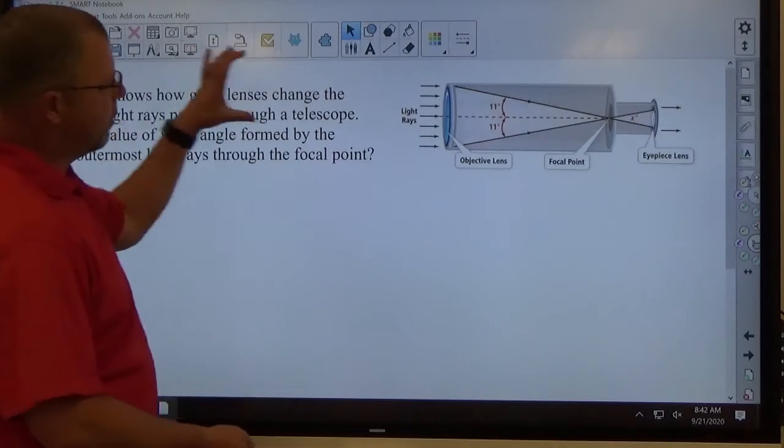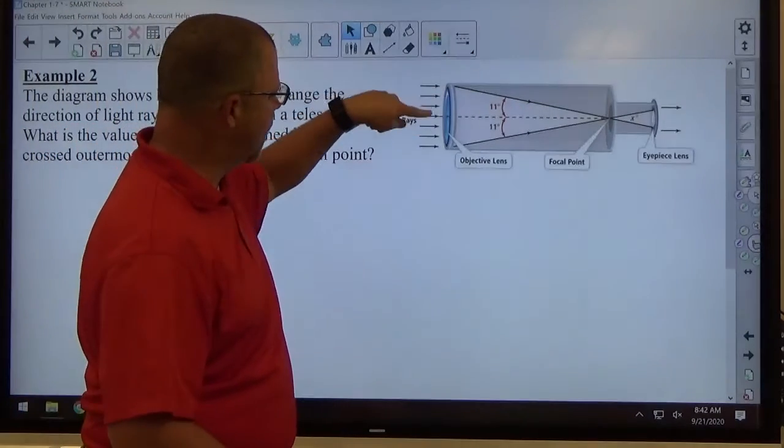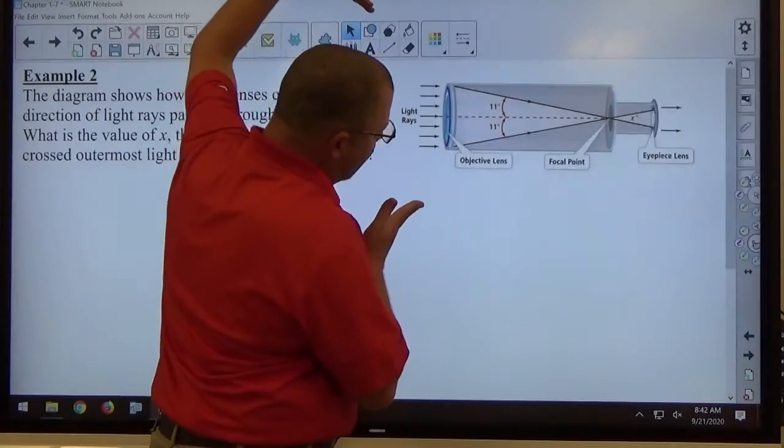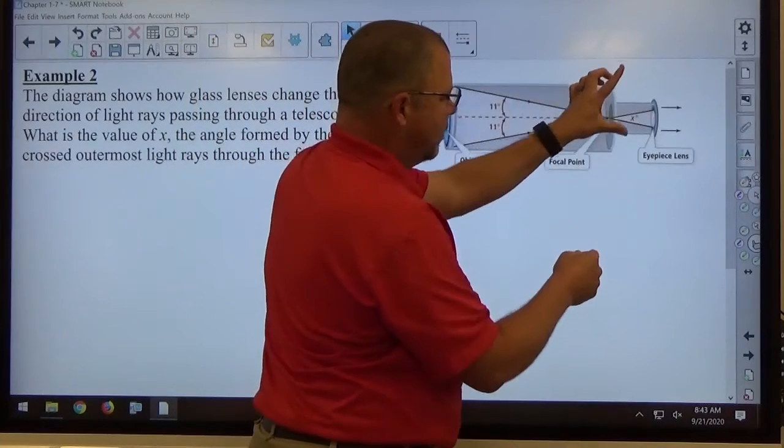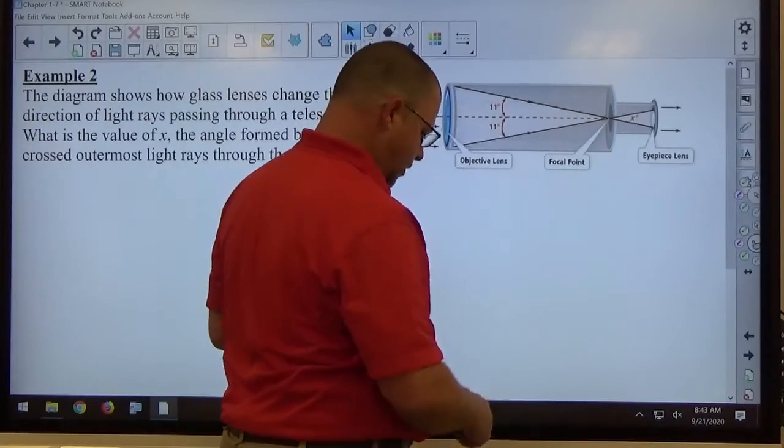Looking at the picture, here we've got our light rays coming through here. This is the lens. The rays are getting directed to this focal point, and then they're coming out with an x-degree angle here.